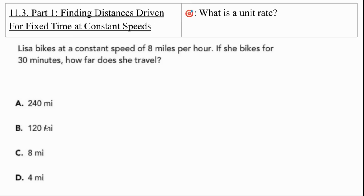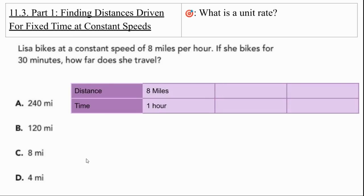240 miles, 120 miles, 8 miles, and 4 miles. The first thing we're going to start is by putting a table up. So it's 8 miles in 1 hour. And she bikes for 30 minutes. Is there any guesses so far?